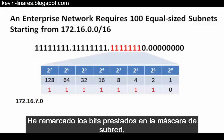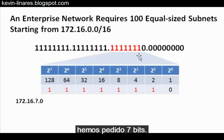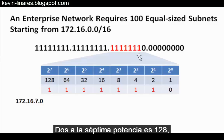So I've highlighted the borrowed bits in the subnet mask. We've borrowed seven bits. Two to the seventh power is 128, creating 128 subnets.